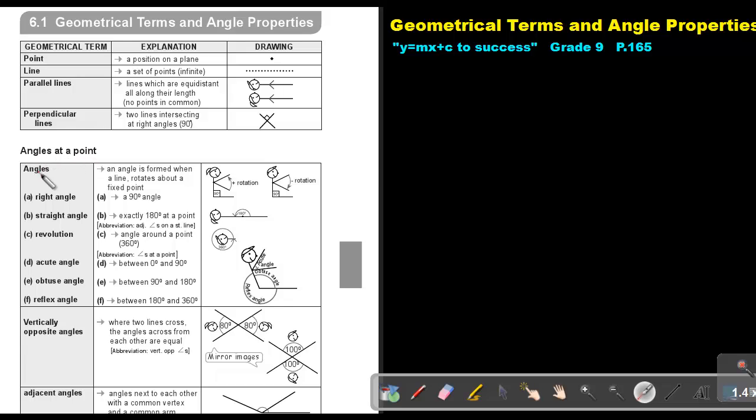Angles at a point. An angle is formed when a line rotates about a fixed point, so a rotation, either positive or negative. A right angle: a 90 degree angle. So that is a right angle.